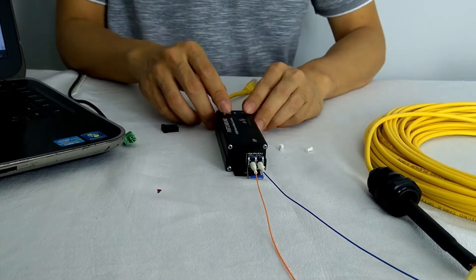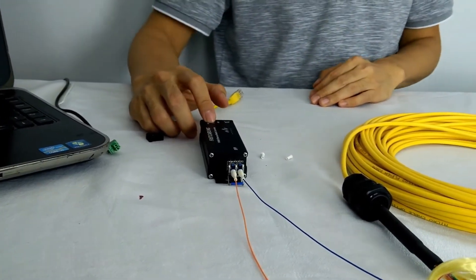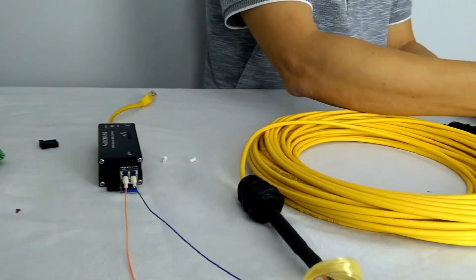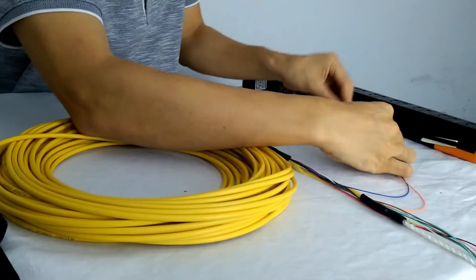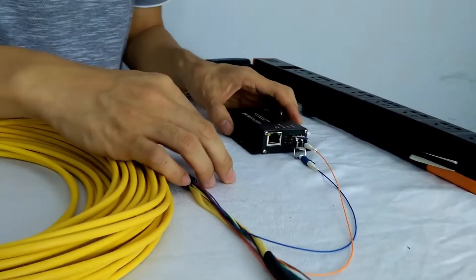And now we are going to the receiver. So this time, the orange is on the left, and now the blue is right.